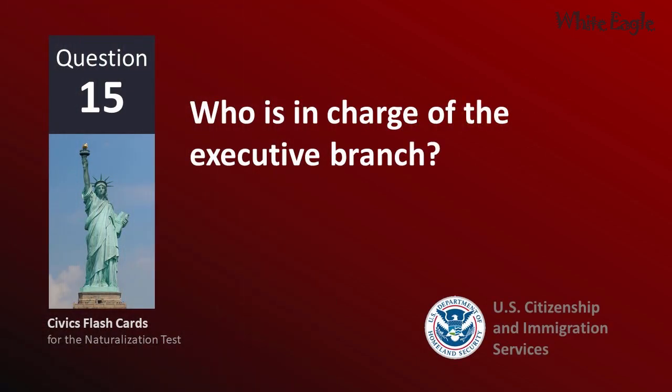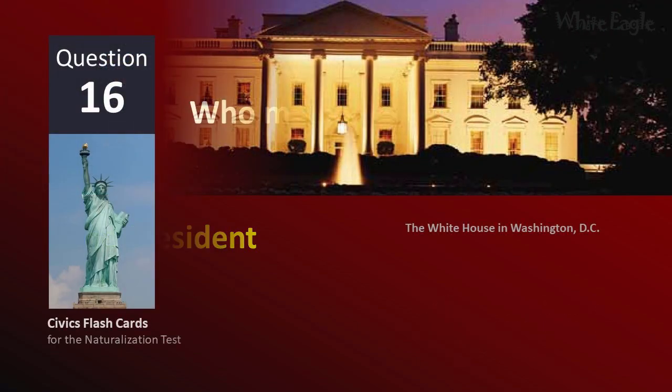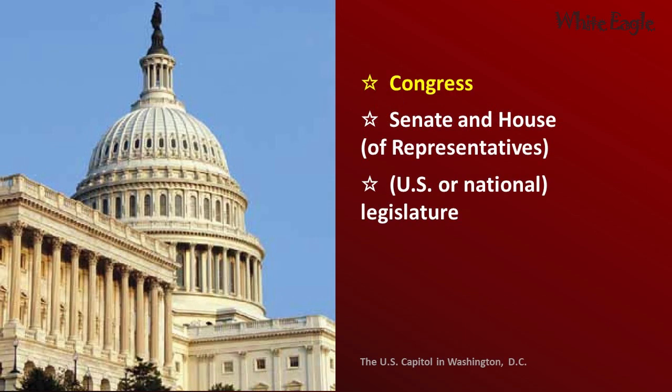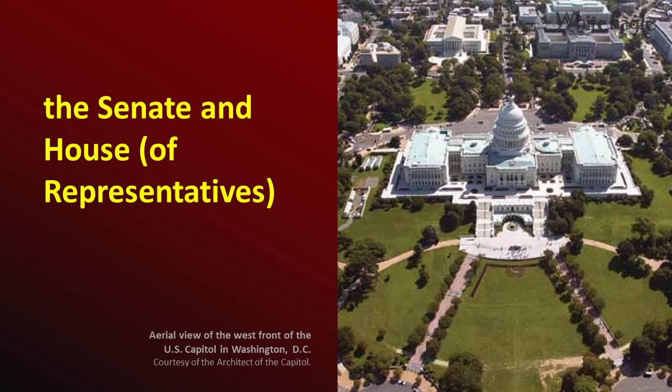Who is in charge of the executive branch? The President. Who makes federal laws? Congress. What are the two parts of the U.S. Congress? The Senate and House of Representatives.